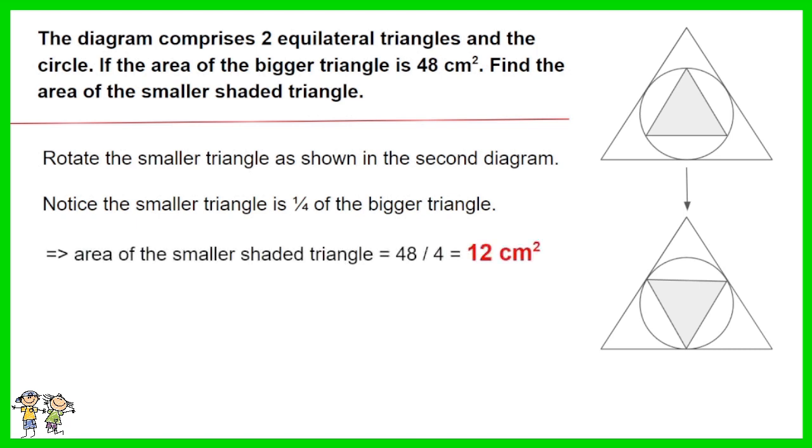Thus the area of the smaller shaded triangle equals 48 divided by 4. The answer is 12 cm squared.